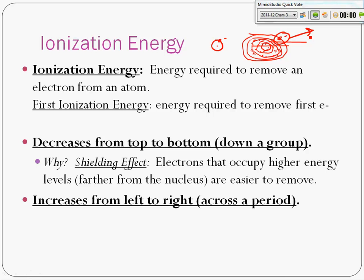Going across a period, like electronegativity, ionization energy increases. And it's the same reason why electronegativity increases and why atomic radius decreases: the number of protons increases as you go across a period. The way we describe it is the nuclear charge increases — you've got more protons, therefore you've got a bigger positive charge. So we're talking about how much energy it takes to pull an electron away from those protons.